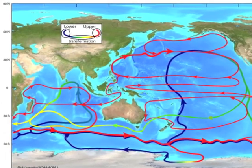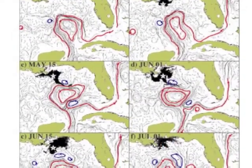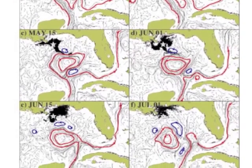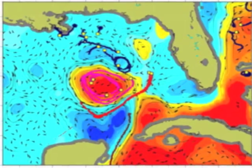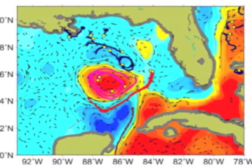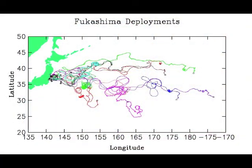Drifters also allow us to collect measurements in places such as the Northwest Indian Ocean, where piracy activity makes it very hard to operate research vessels. Because drifters map ocean surface currents, they also map where particles floating on the ocean surface will be carried. Surface drifters were deployed after the Deepwater Horizon oil spill to observe connectivity within the Gulf of Mexico, and to see whether particles in the northern Gulf would be rapidly carried towards south Florida. Drifters were also deployed off the coast of Japan after the earthquake and tsunami in Fukushima, where a large amount of debris was released into the ocean and subsequently traveled across the Pacific.